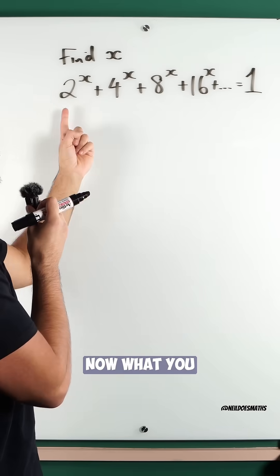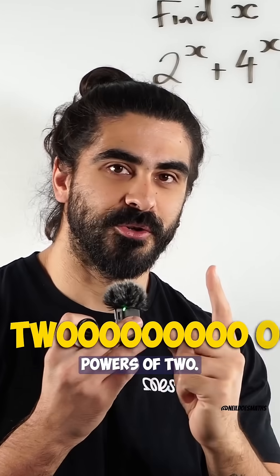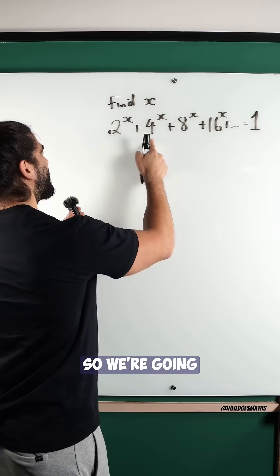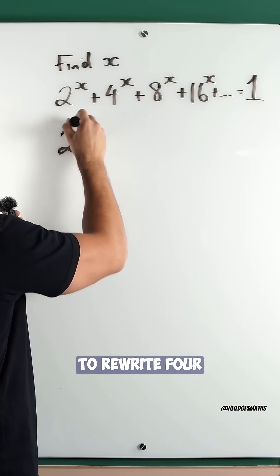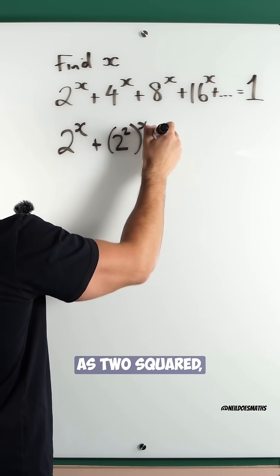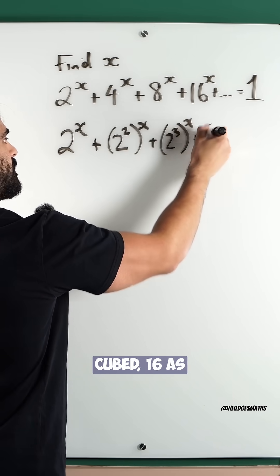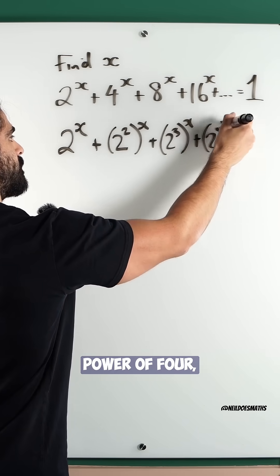Now, what you should notice is that all of these numbers are powers of 2. So we're going to rewrite 4 as 2 squared, 8 as 2 cubed, 16 as 2 to the power of 4, etc.